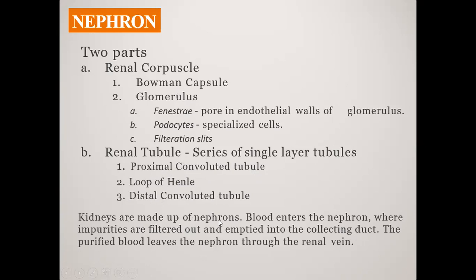Blood enters into the nephron where impurities are filtered out and emptied into the collecting duct. The purified blood then leaves the nephron through the renal vein.